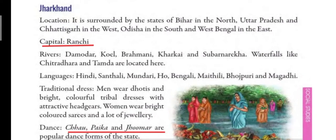Firstly, we will find out what is the location of Jharkhand. It is surrounded by the states of Bihar in the north, Uttar Pradesh and Chhattisgarh in the west, Odisha in the south, and West Bengal in the east. The capital is Ranchi. Rivers flowing here are Damodar, Koyal, Brahmani, Karkai, Subarnekha, and waterfalls like Chitradhara and Tamda are located here.